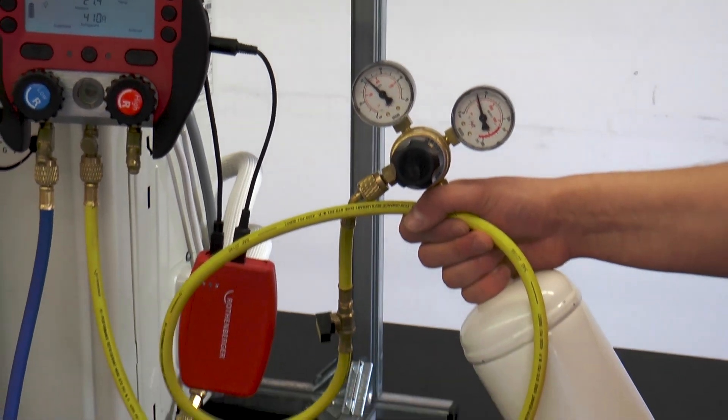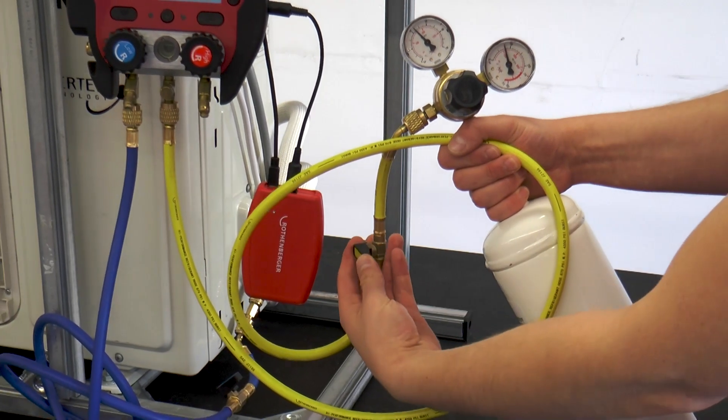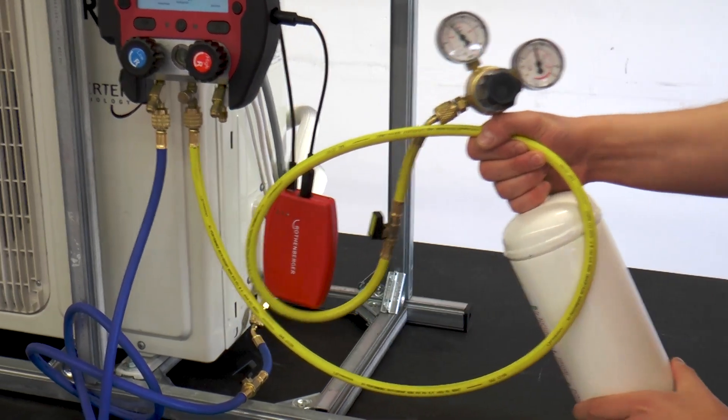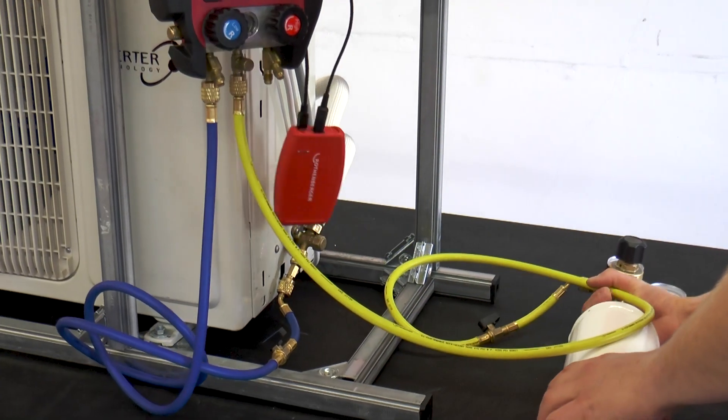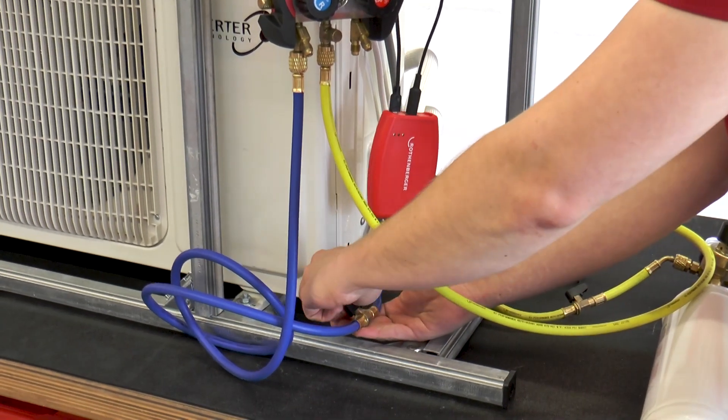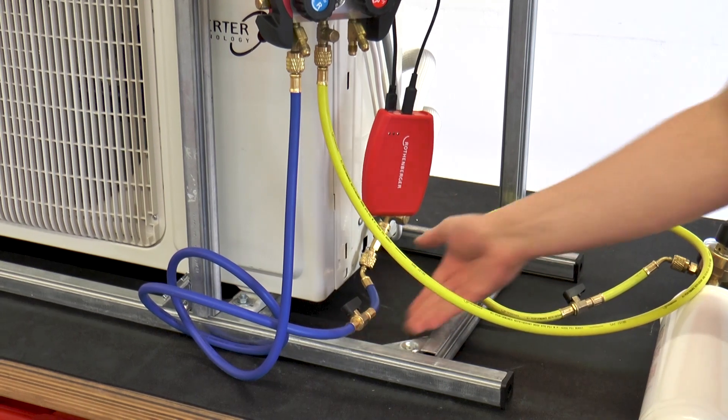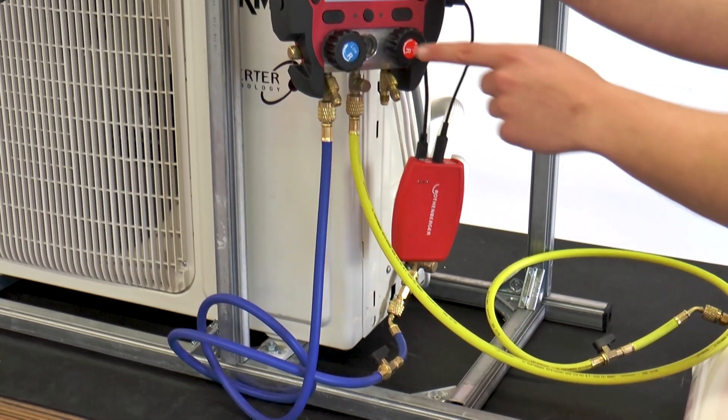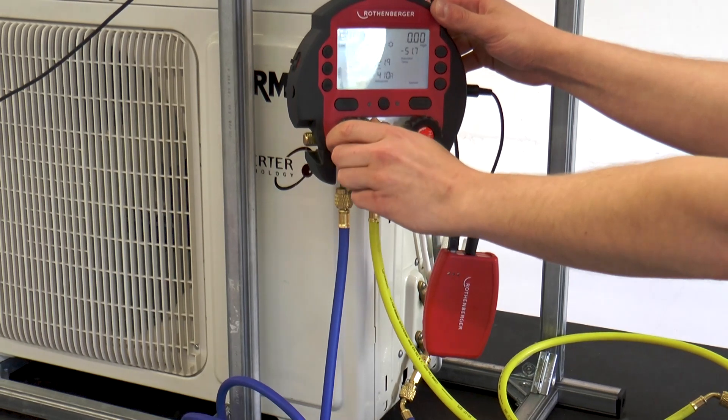Next, the shutoff valve on the working hose is open. The shutoff valve on our blue test and measuring hose is then open. Now the dry nitrogen can flow into the air conditioning system in a controlled way via the yellow working hose and the working valve.